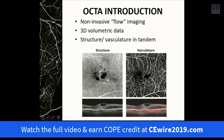Most OCT angiography systems display conventional structural OCT data and angiography data side by side, and these can even be superimposed upon one another. This allows for precise localization of vascular lesions such as a choroidal neovascular membrane underlying a pigment epithelial detachment, and identification of potential sources of macular edema — both are the case in this example.